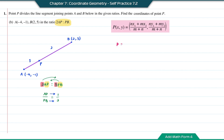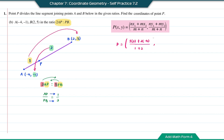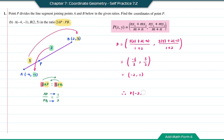The x-coordinate of P will be 1 times 2 plus 2 times negative 4, divided by the total ratio 1 plus 2. For the y-coordinate, it will be 1 times 5 plus 2 times negative 1, divided by 1 plus 2. This equals negative 6 divided by 3 and 3 divided by 3. Simplifying, you get negative 2 and 1. Therefore, the coordinate P for question B is (negative 2, 1).